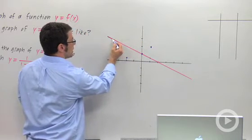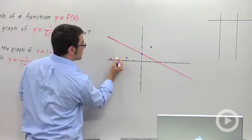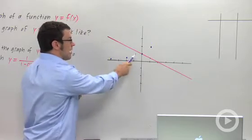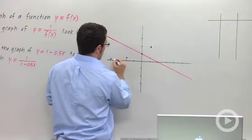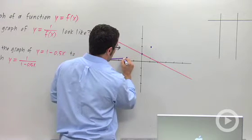Here, we have a y coordinate of 3. The reciprocal is 1 third. And you can kind of see what's going to happen. As the graph goes up to infinity, the reciprocal goes down to 0. And we get this kind of shape.